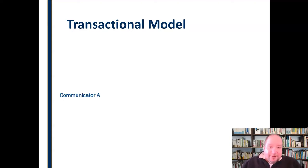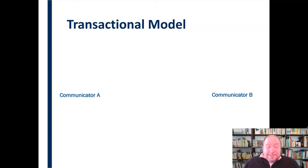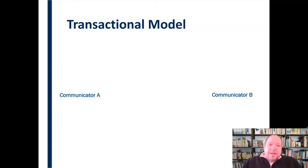We start with Communicator A in the transactional model — the person or persons who have something they wish to communicate. Then we move to Communicator B, the person or persons on the other side of this equation. Both of these people are senders and receivers of information — it's not one or the other. All people on all sides are constantly sending and receiving information. That's why we call them Communicator A and Communicator B, as opposed to sender and receiver.